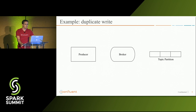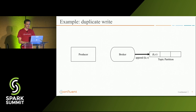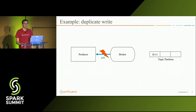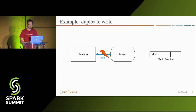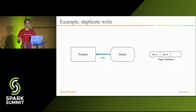Let me walk through a quick example of how those duplicates can occur. We have a producer on the left-hand side, a Kafka broker, and a topic partition where we want to write data. The producer sends a record — basically a key-value pair — to the broker, which appends it to the log and sends an acknowledgement back. But this acknowledgement could go wrong due to a lossy network or the broker going down. The producer never receives the acknowledgement, assumes the record was never written, and sends the same record again. The broker doesn't know it's a retry — to the broker it looks like a new write — so it happily appends the record a second time, resulting in a duplicate.